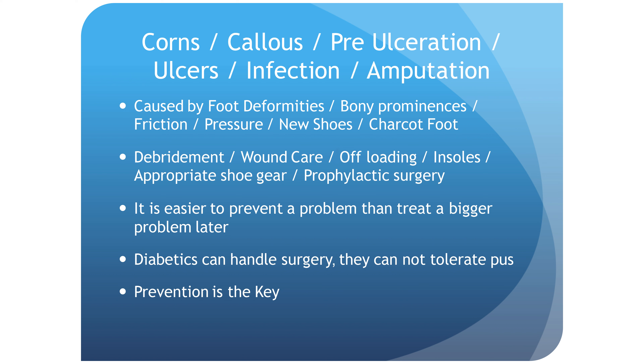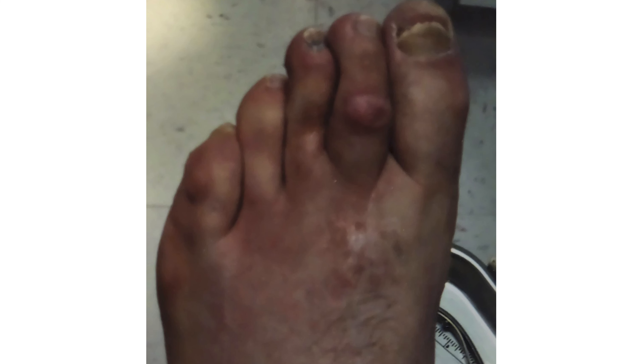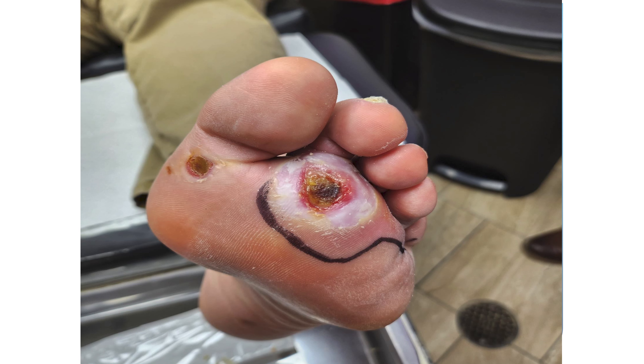Next, corns, calluses, and pre-ulcerations. For example, if you had a corn on the top of your right second toe with a hammer toe deformity, that could be irritation from shoe gear or a bony prominence and can develop into an ulceration. An ulceration is an opening of the skin which can go down to the bone, the bone can get infected, and the patient could lose their toe. We like to correct these before that happens — usually by trimming the callus or corn, offloading the lesion, or possibly doing surgery.